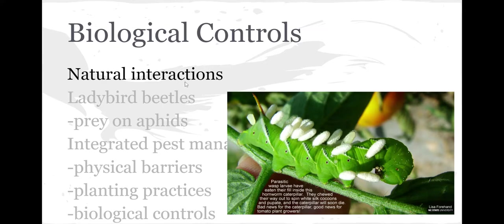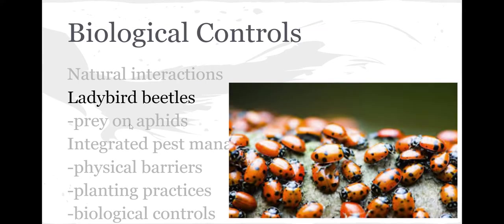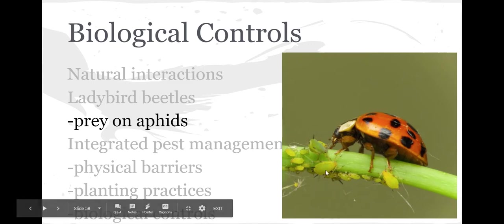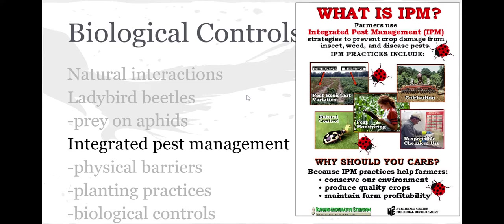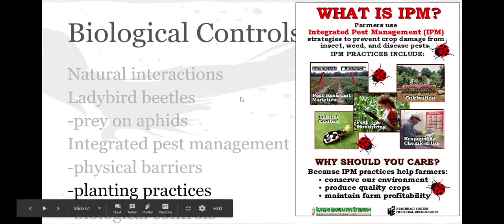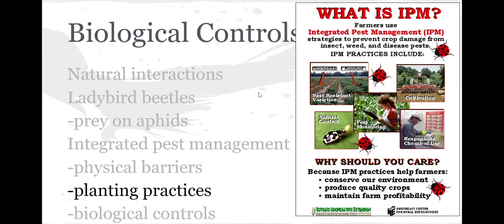In addition, biological controls can cause all kinds of natural interactions. For example, ladybird beetles or Asian lady beetles, which you may see periodically, were brought in to eat aphids. But they've blown out of control, and now there are lots of them everywhere. When you bring in biological controls and release them into the environment, it's really hard to get them back. So instead, we use things like physical barriers and different planting practices. The method by which you plant can help reduce the number of pests, along with some other simple biological controls.